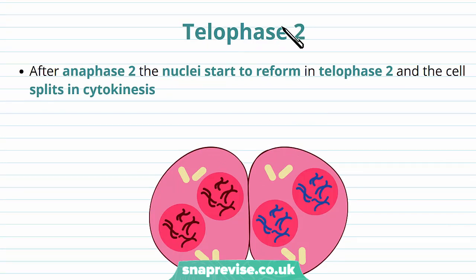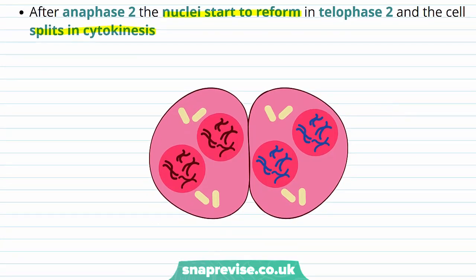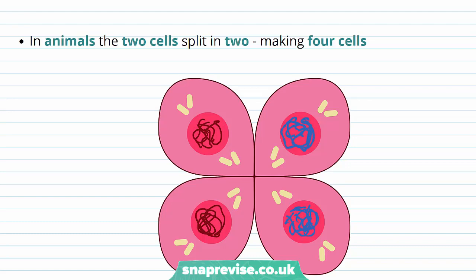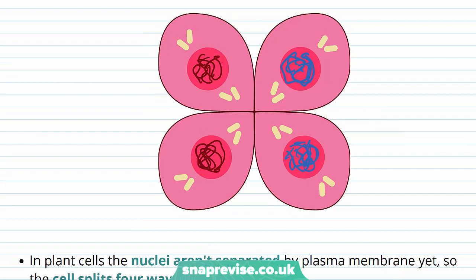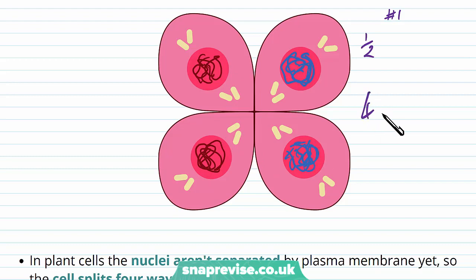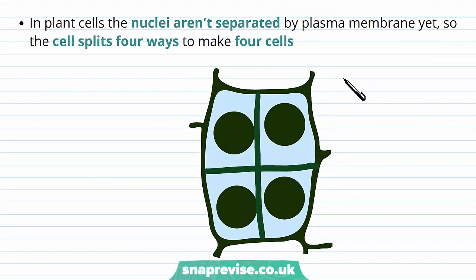Finally, in telophase 2, after anaphase 2 the nuclei start to reform, and then the cell splits in cytokinesis. Each cell has now formed two new nuclei, the spindle fibres have gone away, and the DNA starts to re-disperse. For animal cells, each cell splits into two, making four cells in total. Each gamete now has half the genetic material — just one copy for each chromosome pair — and after crossing over all the different combinations of alleles will be massively varied, giving four haploid gametes. In plant cells, because they didn't split into two cells after meiosis 1, there are four nuclei not yet separated by plasma membrane, and the cell has to split four ways to make the four cells.